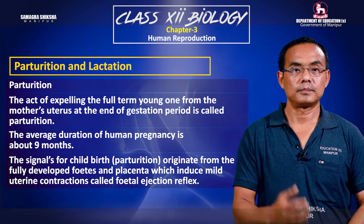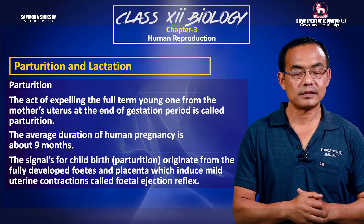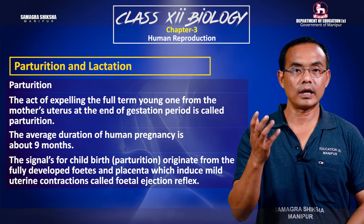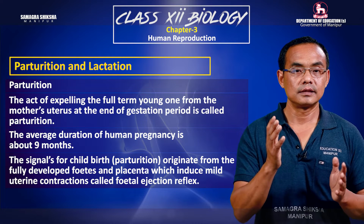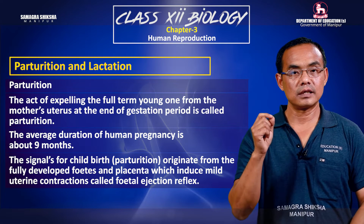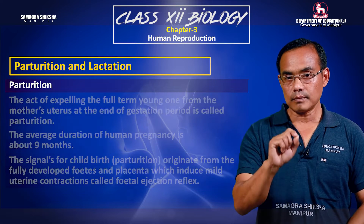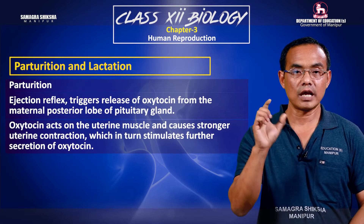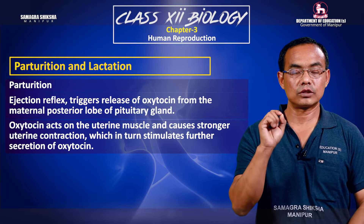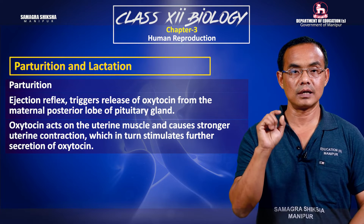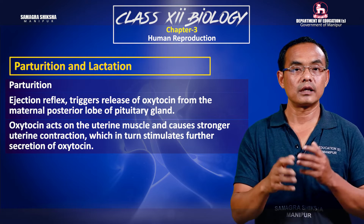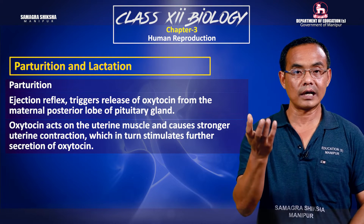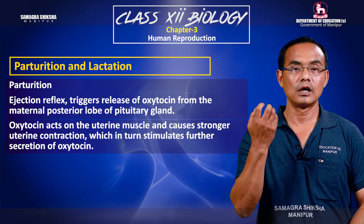When the fetal ejection reflex occurs, it produces mild contractions. The posterior pituitary releases oxytocin, which is a hormone that causes uterine contractions.